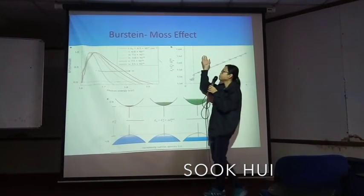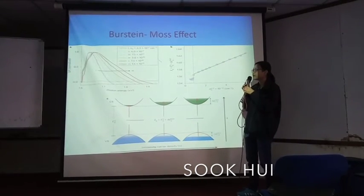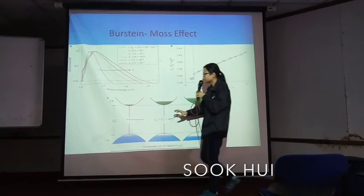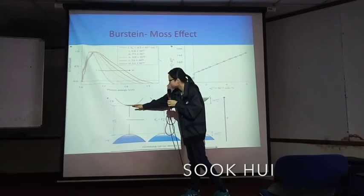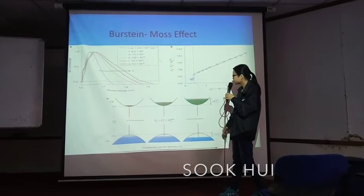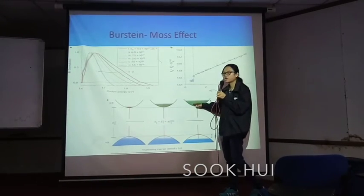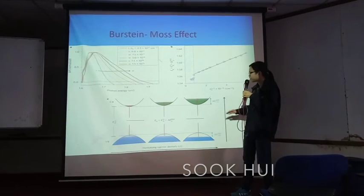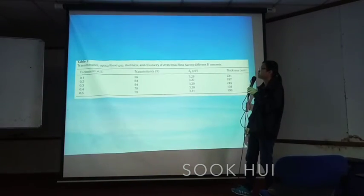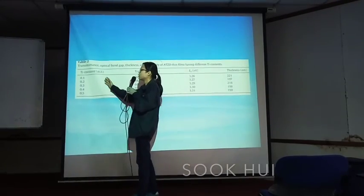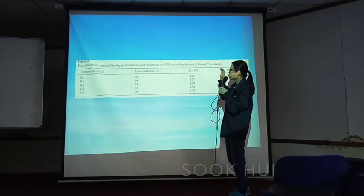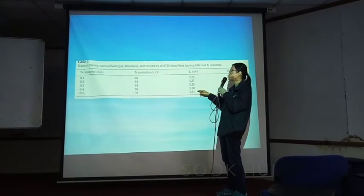The optical band gap increases when titanium concentration increases, due to the Burstein-Moss effect. This effect occurs when a metal is doped into a thin-film and the band gap widens. As the titanium concentration increases, the increasing carrier density causes the band gap to increase due to the filling of electronic states at the bottom of the conduction band, pushing the Fermi level higher. This table shows that when titanium concentration increases, transmittance decreases, and the optical band gap energy increases from 3.26 to 3.31 eV.